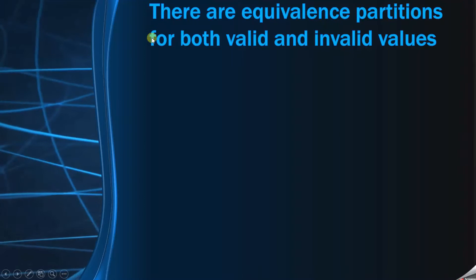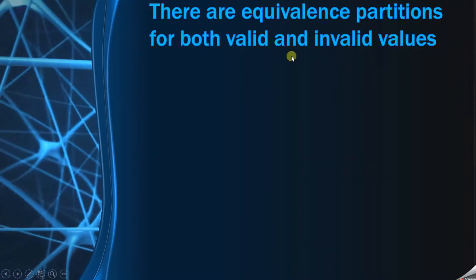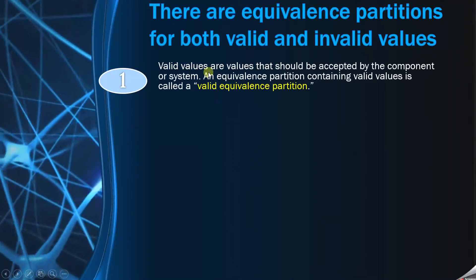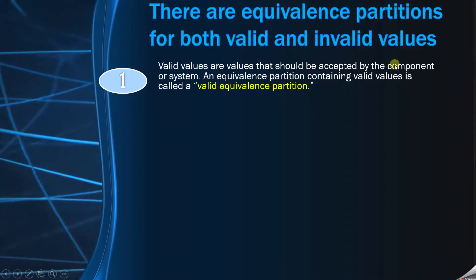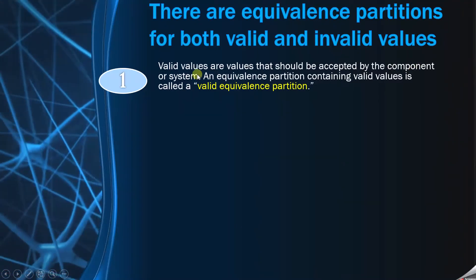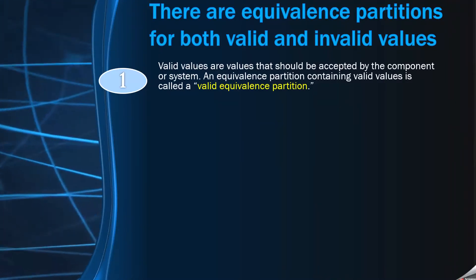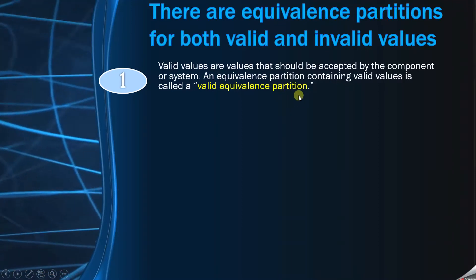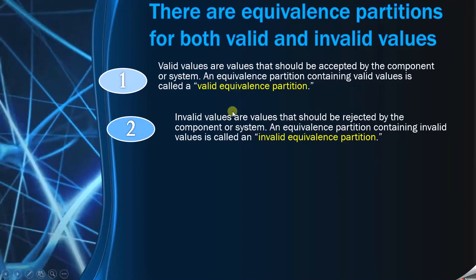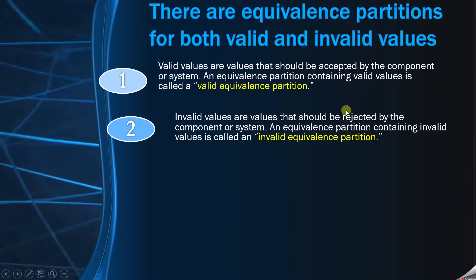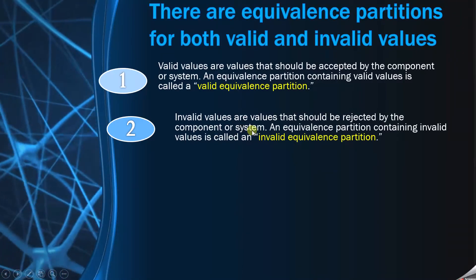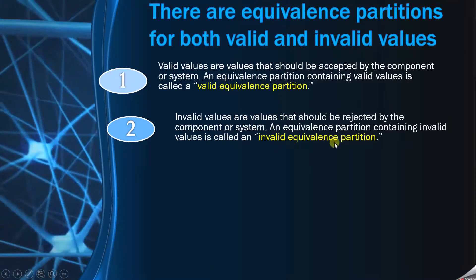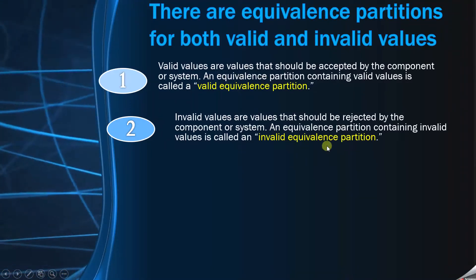There are equivalence partitions for both valid and invalid values. We can provide equivalence classes for valid values as well as for invalid values. Valid values are the values that should be accepted by the component or system — all the values which the system is able to accept. The partition will be known as a valid equivalence partition or valid equivalence class. Similarly, invalid values are the values that should be rejected by the component or system. If a system is not accepting some values, those will be called invalid values, and the class will be called an invalid equivalence partition.